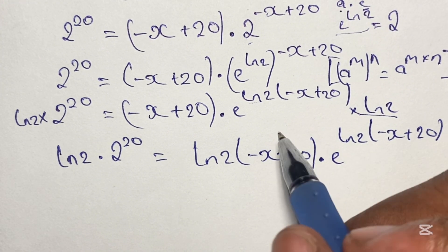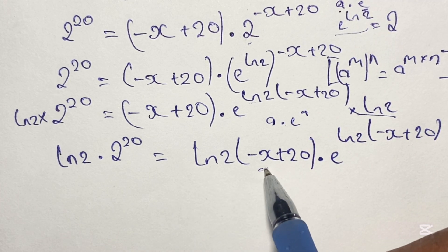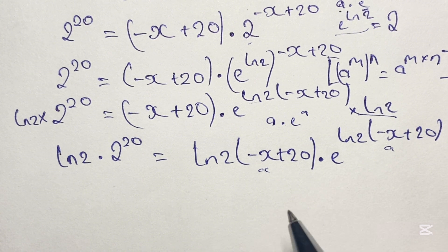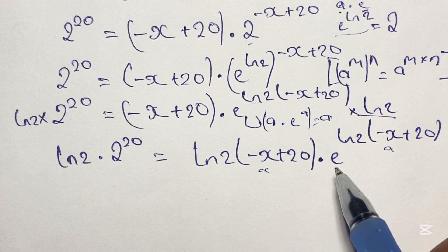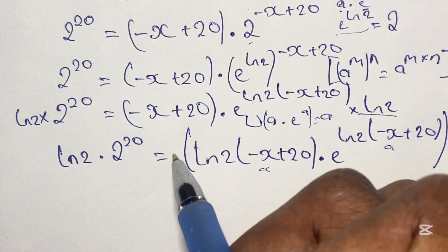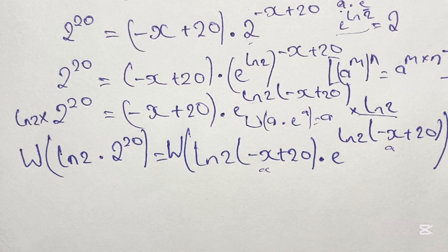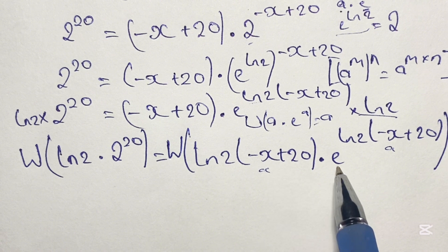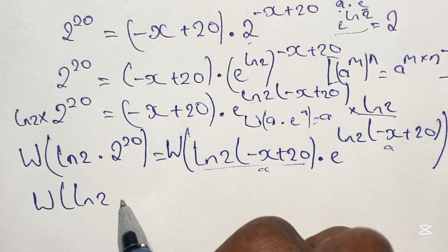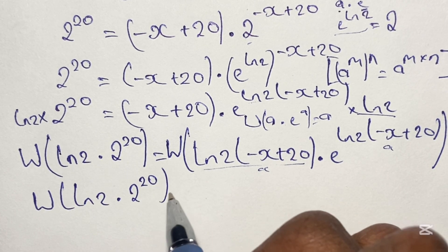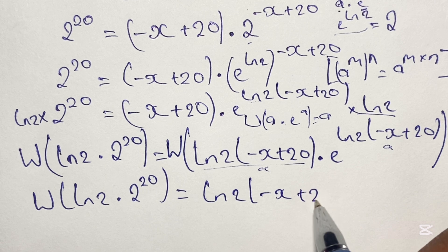Referring back to our expression, we actually have a times e to the power of a, where ln 2 times negative x plus 20 is a in the base, and also a in the power, with e in the middle. Applying the W function to this expression gives us a as the result. So we take the W of both sides of this equation. Applying the W function to the right-hand side gives us ln 2 times negative x plus 20. So we have W of ln 2 times 2 to the power of 20 equals ln 2 times negative x plus 20.